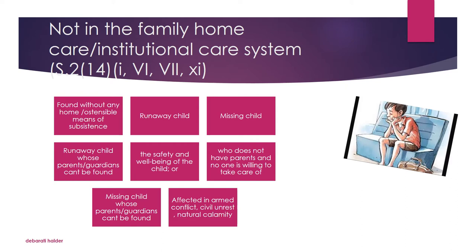Next we get to see runaway children. Many law students mistake these as only those children who have run away from their parental homes — that is wrong. Certain groups of children may also run away from the institutional care system, meaning they might have run away from observation homes, children's homes, or even boarding schools or daycare schools. Holistically, this also includes children who have run away from their homes for several reasons.